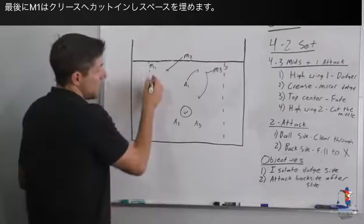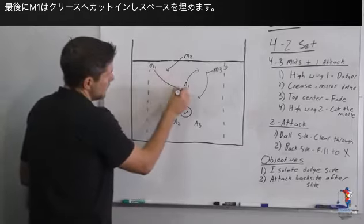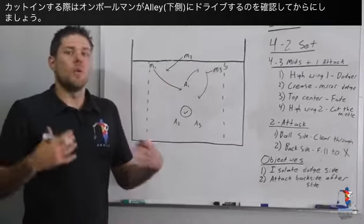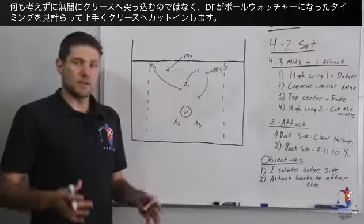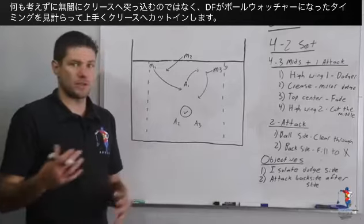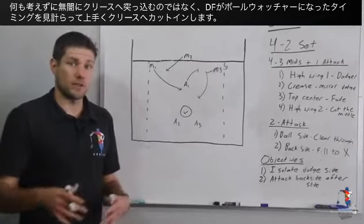Finally we have M1 who's the backside and his job is to cut the middle. Now on his cut the middle he needs to wait it out, see alleys. He doesn't just want to dive in not knowing where he's going. He wants to watch his defender's head, see if he's watching the ball too much and cut to good space.